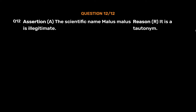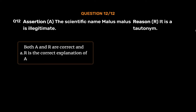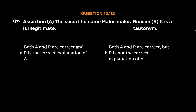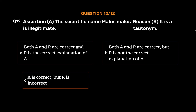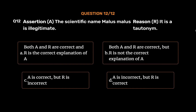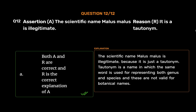Question No. 12. Assertion A: The scientific name Malus malus is illegitimate. Reason R: It is a tautonym. Option A: Both A and R are correct and R is the correct explanation of A. Option B: Both A and R are correct, but R is not the correct explanation of A. Option C: A is correct, but R is incorrect. Option D: A is incorrect, but R is correct. The correct answer is Option A. The scientific name Malus malus is illegitimate because it is a tautonym. A tautonym is a name in which the same word is used for representing both genus and species, and these are not valid for botanical names.